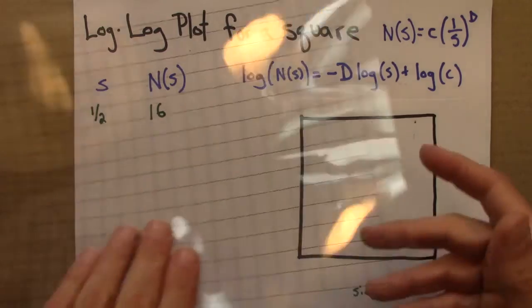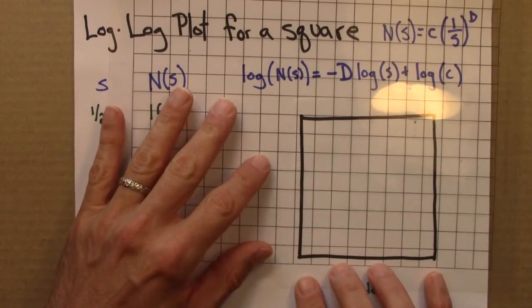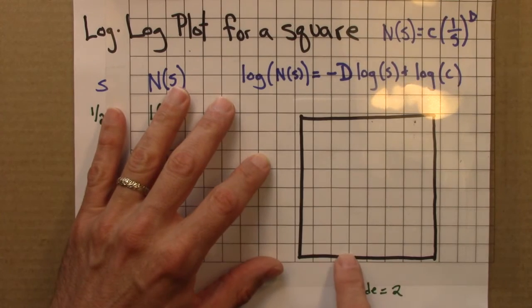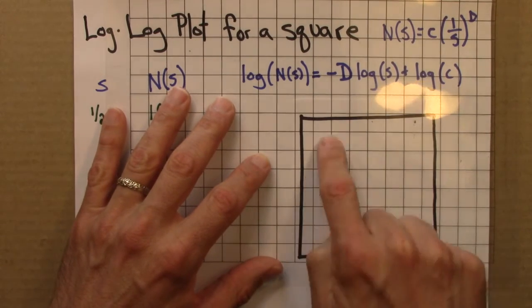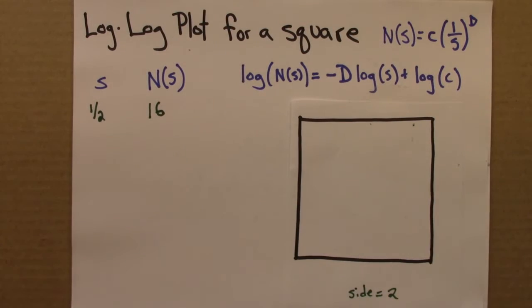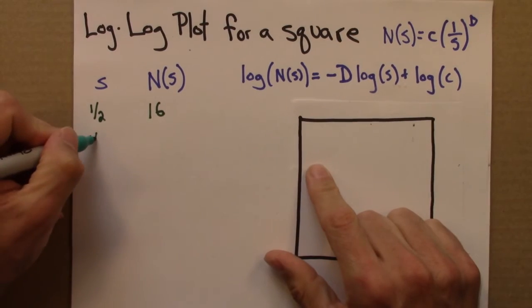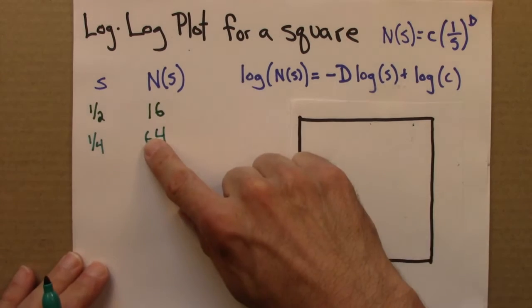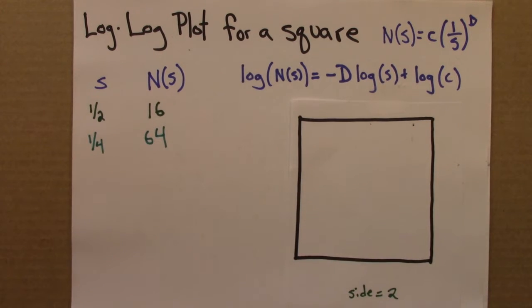Let's go one size smaller, s of a quarter, and line that up. 1, 2, 3, 4, 5, 6, 7, 8. It'll be 8 by 8, so it'll be 64. That's a quarter, that's 64.